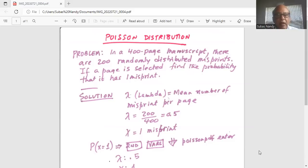So solution, lambda. Lambda is the mean number of misprint per page. It's 200 divided by 400 equal to 0.5. And we are looking for only one misprint, so x is 1. So we have to find out probability of x equal to 1.